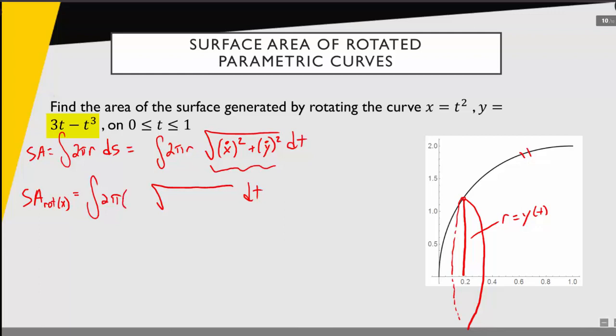So all we're going to do for our radius value is plug in that 3t minus t cubed, y of t, and now we can just calculate the other pieces we need.